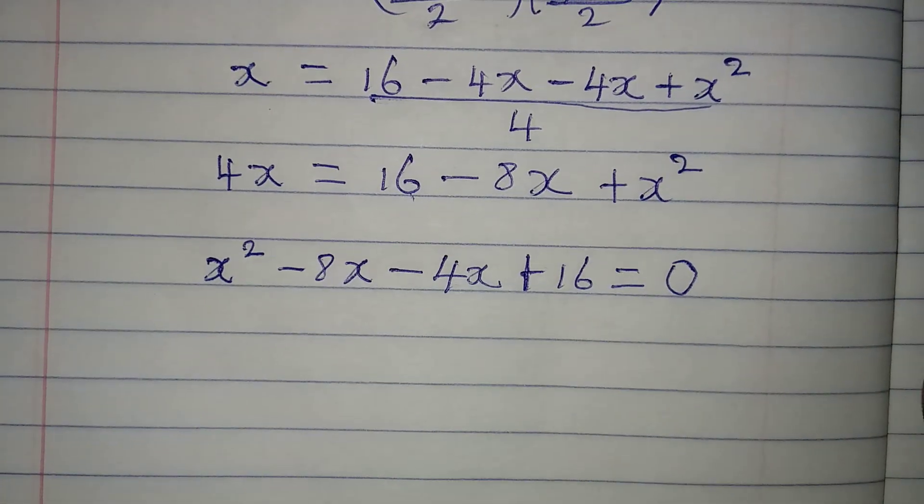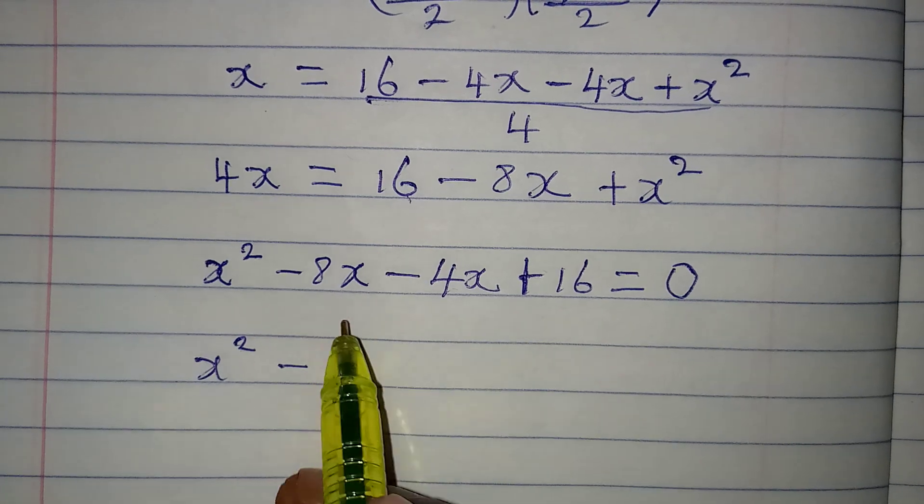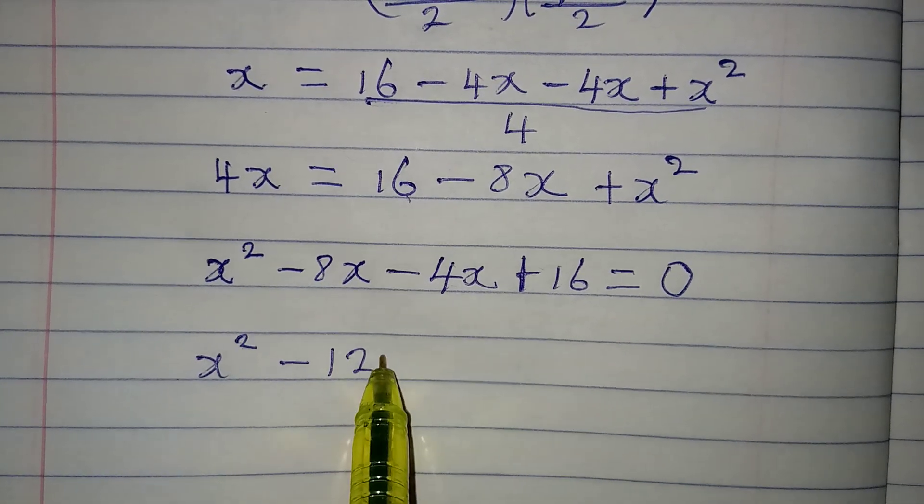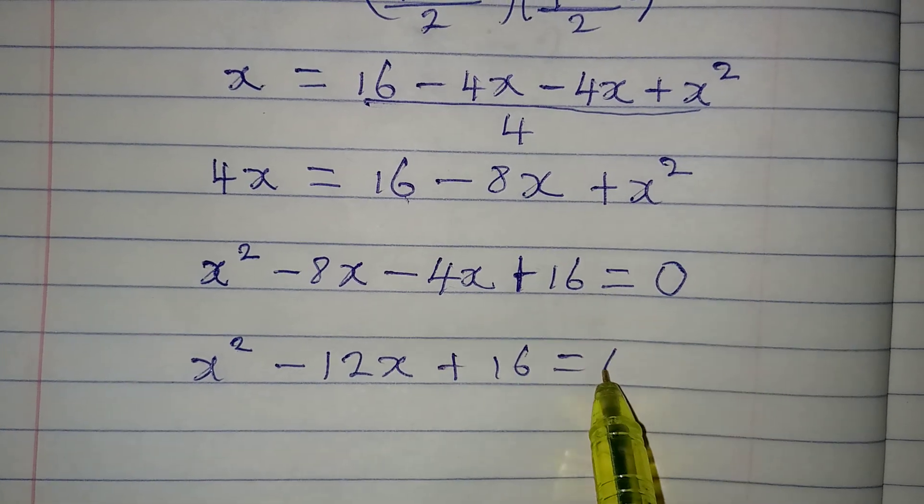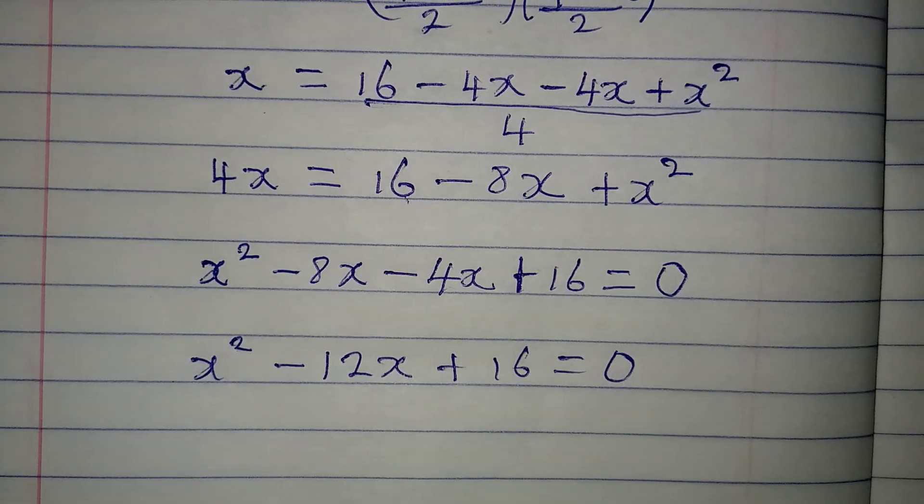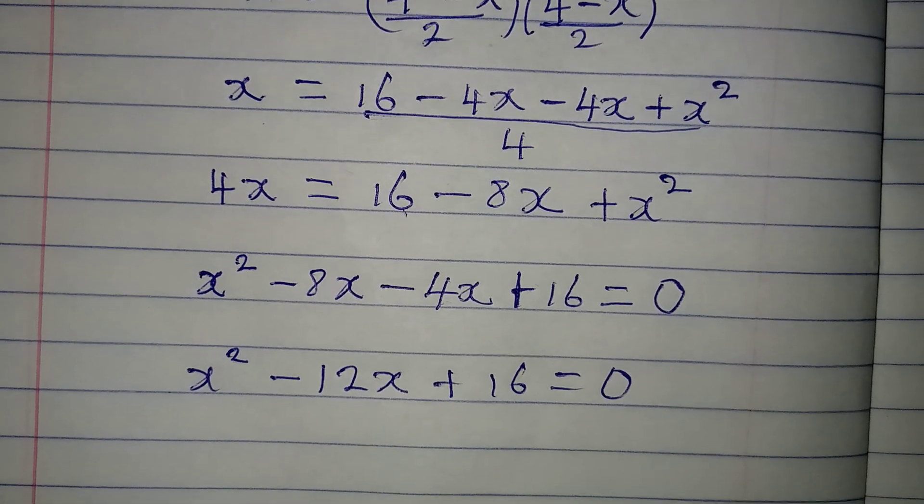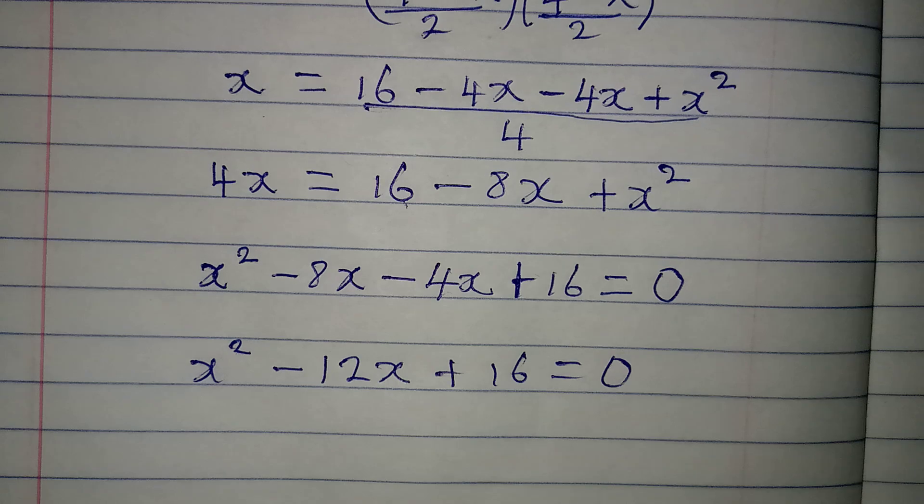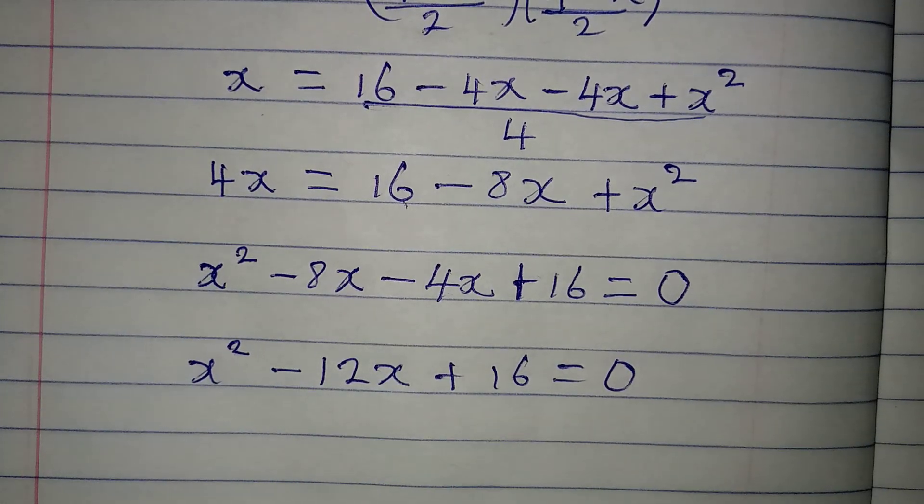And now, let's continue so that we have x squared minus here, we will have 12x, then plus 16, and the whole of this is equal to 0. This is a quadratic equation.